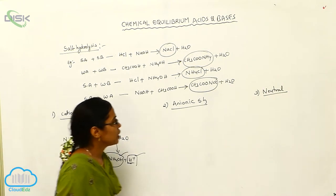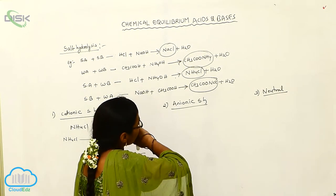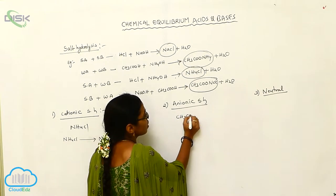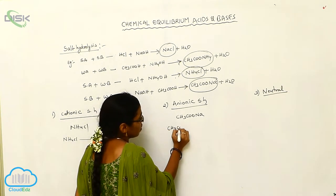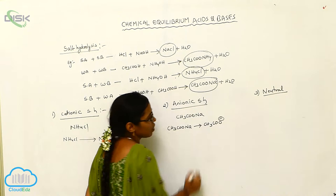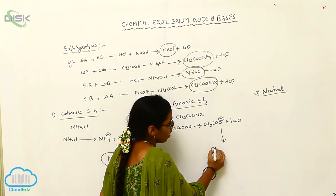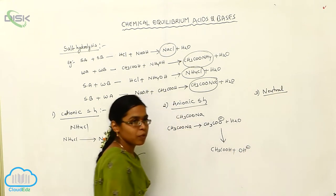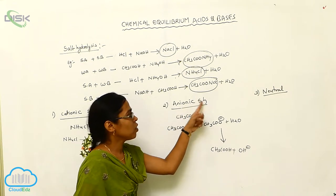Next, I want to explain anionic salt hydrolysis. For anionic salt hydrolysis, I am taking sodium acetate, CH3COONa. Sodium acetate gives the CH3COO⁻ acetate ion. This acetate ion reacts with water and forms acetic acid, CH3COOH, and the remaining part is OH⁻. The salt on hydrolysis which gives anions is called anionic salt hydrolysis.